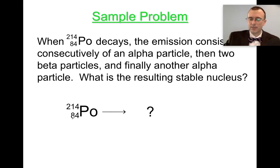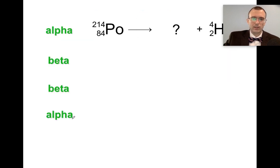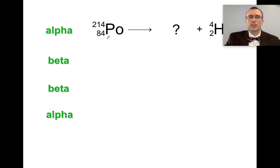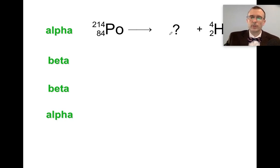Step 1: Polonium-214 undergoes alpha decay, giving off a helium-4 nucleus. We ask: what plus 2 equals 84? That's 82. And what plus 4 equals 214? That's 210. So the product is element 82, which is lead. This is lead-210.